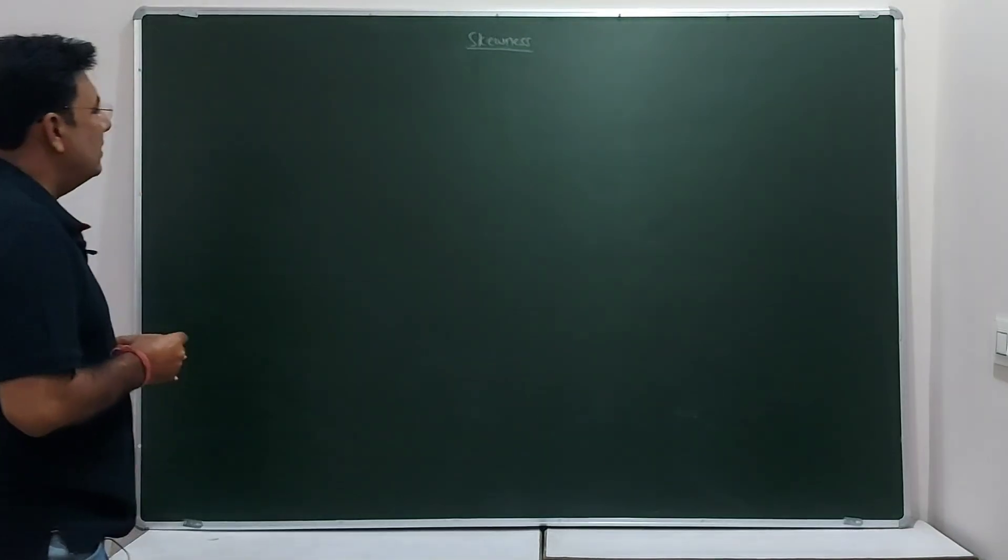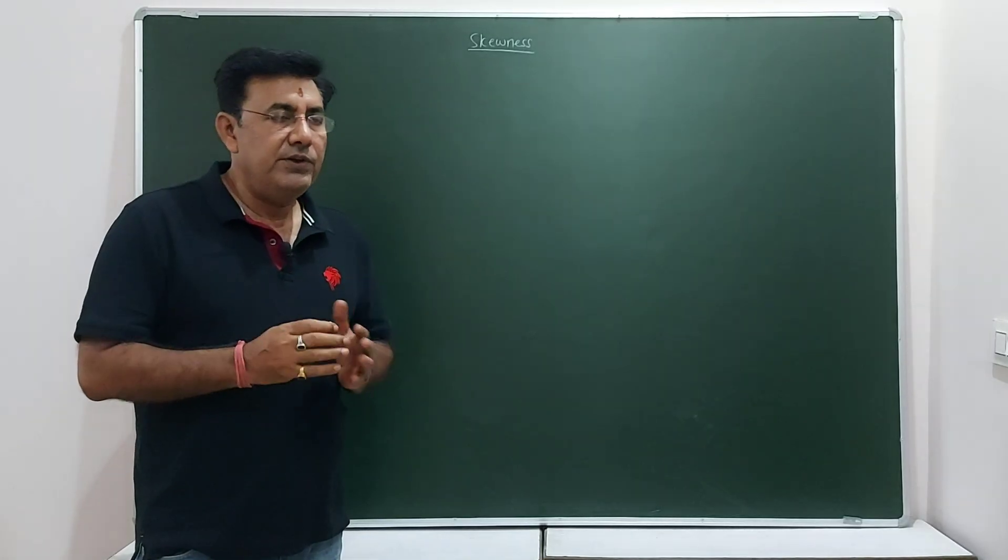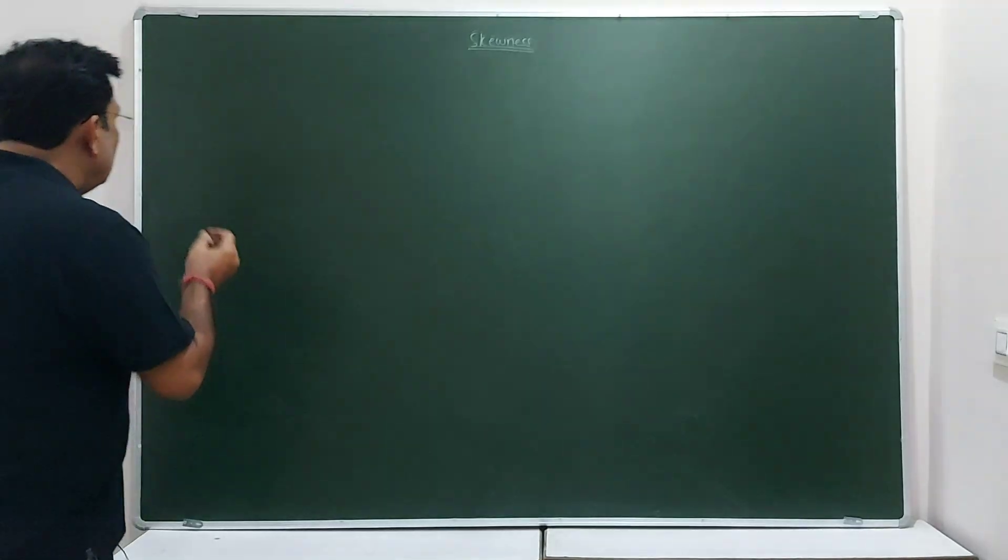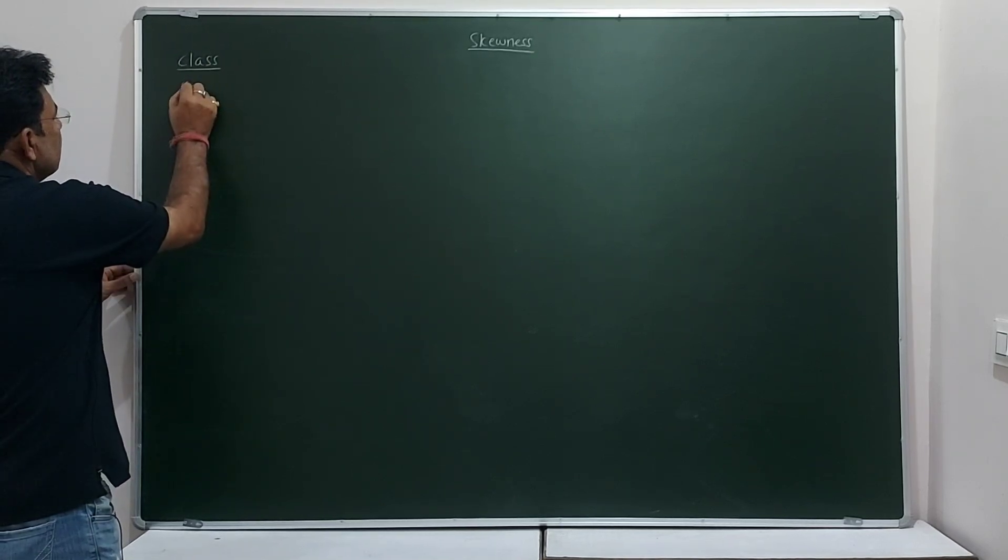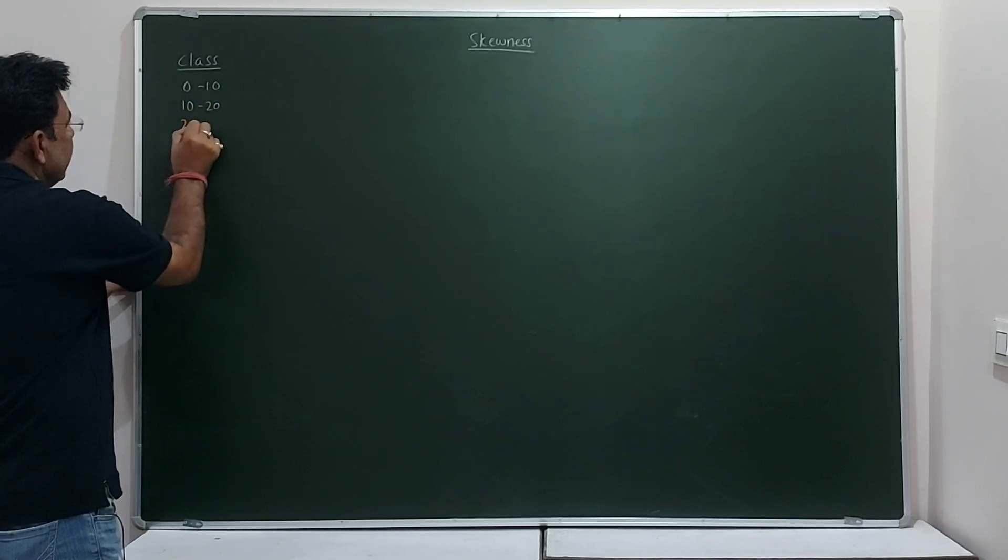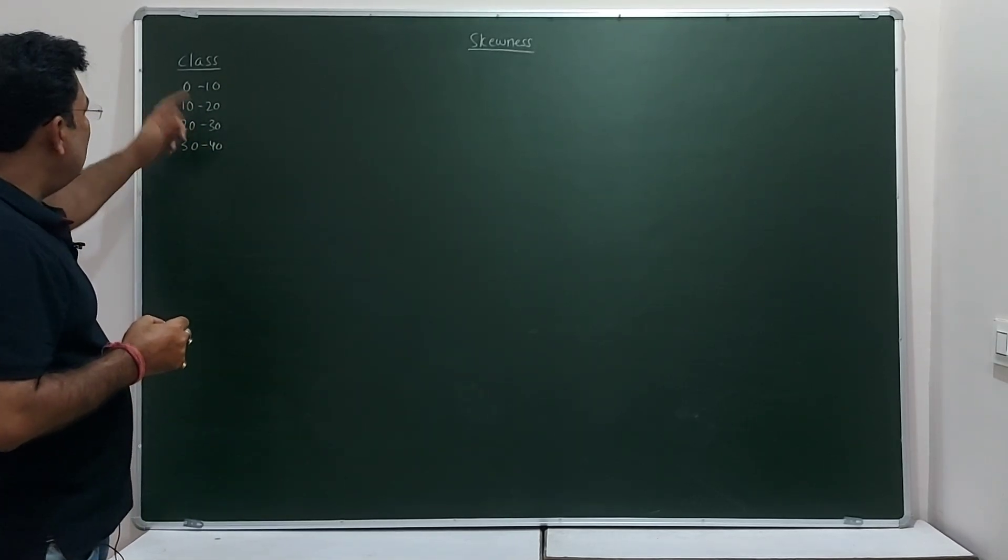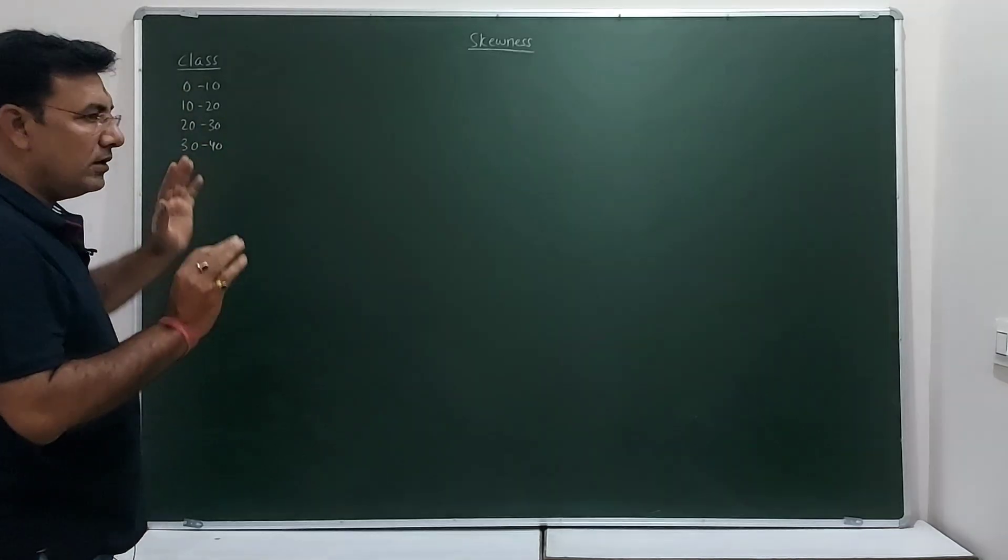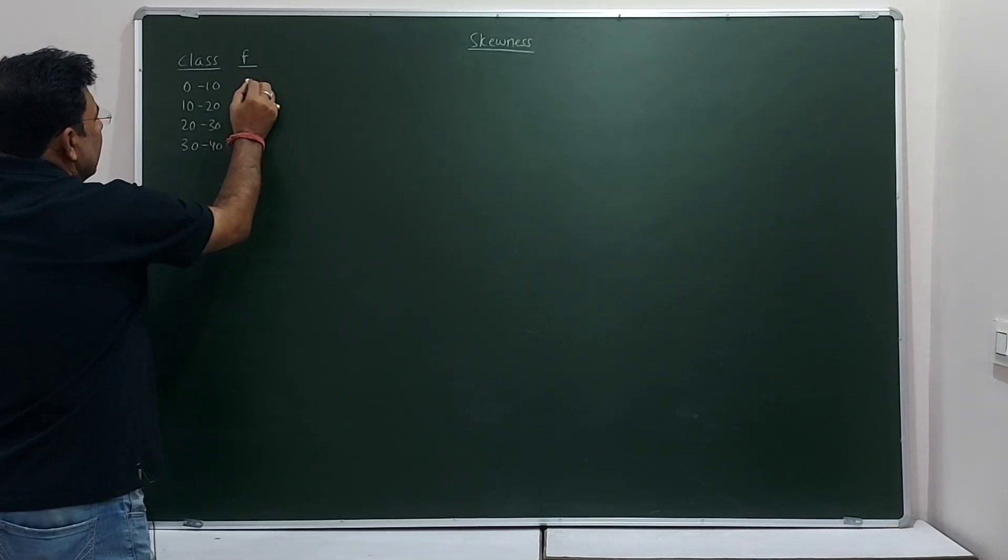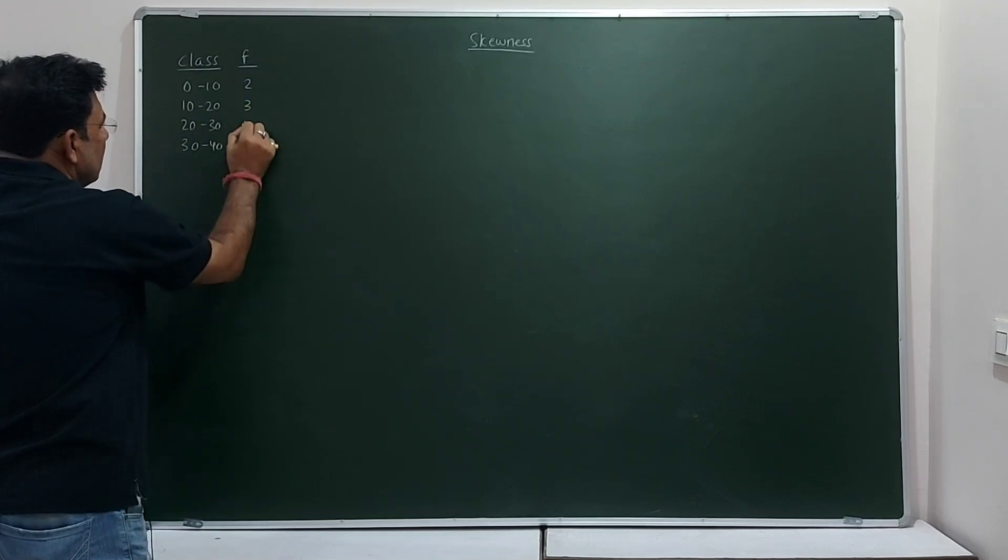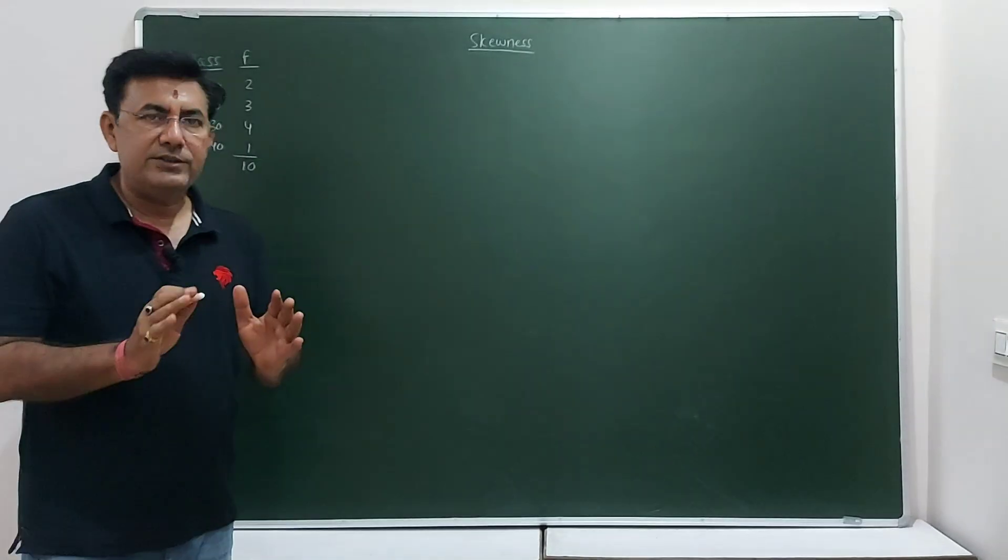You must have heard about class and frequency. There are two types of classes: one is closed class, the other is open end class. In this video we will be looking at the numerical of closed class. Let's take a very simple question. The class 0 to 10, 10 to 20, 20 to 30, and 30 to 40. This is called class and it is closed from both the ends, both the starting end and the closing end. Let's take number of students, or simply you can write F, and let this be 2, 3, 4, and 1. So total number of students here is 10. This is the question like marks obtained by 10 students.